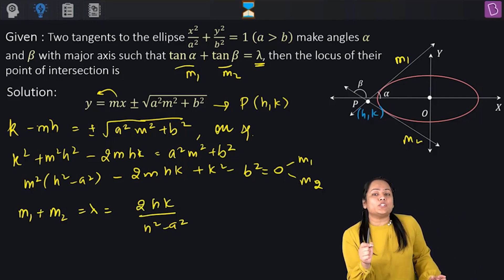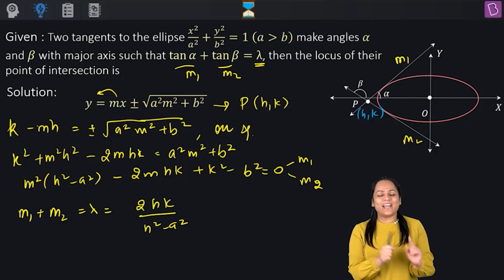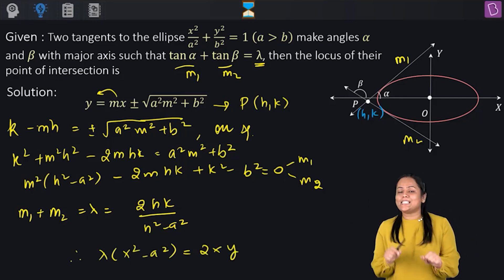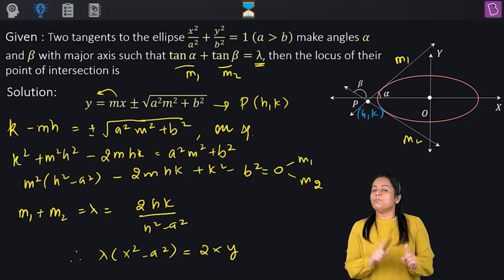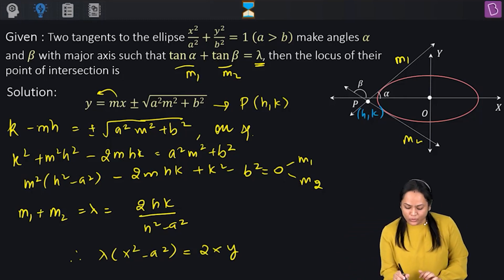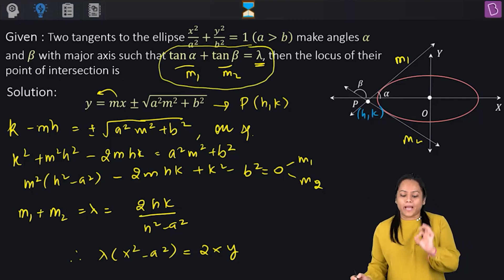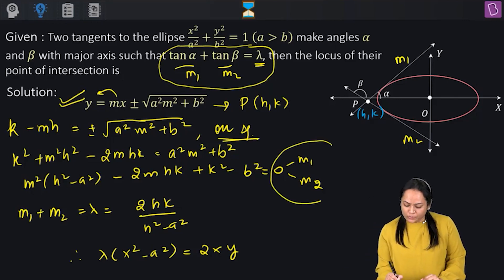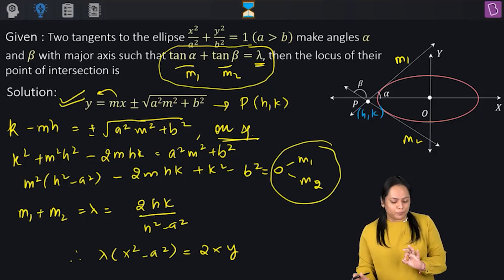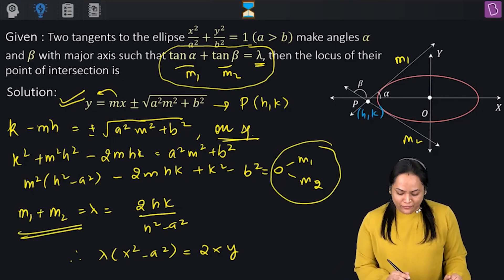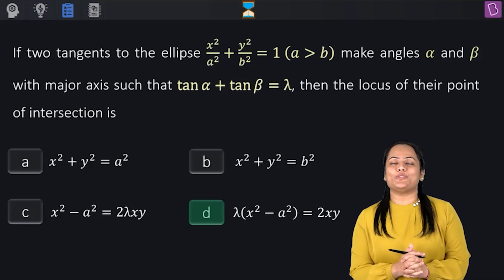Cross-multiplying and replacing h with x, k with y, the final locus is: λ(x² − a²) = 2xy. The answer is D.